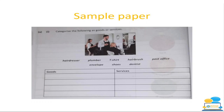Here is a sample paper question. Part A says: categorise the following as goods or services. It lists hairdresser, plumber, t-shirt, hairbrush, post office, envelope, shoes, and dentist, with two columns for goods and services. There are four spaces in each column. Goods would be t-shirt, hairbrush, envelope, and shoes. What I'd suggest is to cross out the words as you're doing it, because it means you're less likely to accidentally skip one — especially under the pressure of exams.